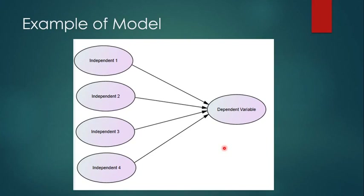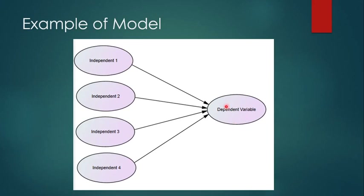This is a linear multiple regression where we have only a single dependent variable and more than one independent variable. The dependent variable varies — it keeps on changing — and so do the independent variables. Independent variables have an impact on the dependent variable, shown by arrows going from the independents toward the dependent.